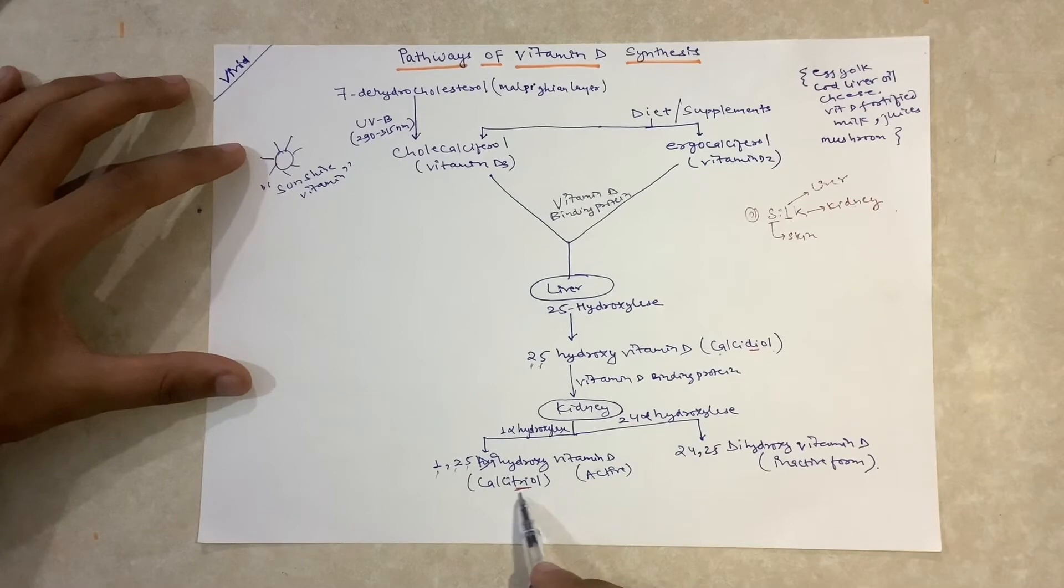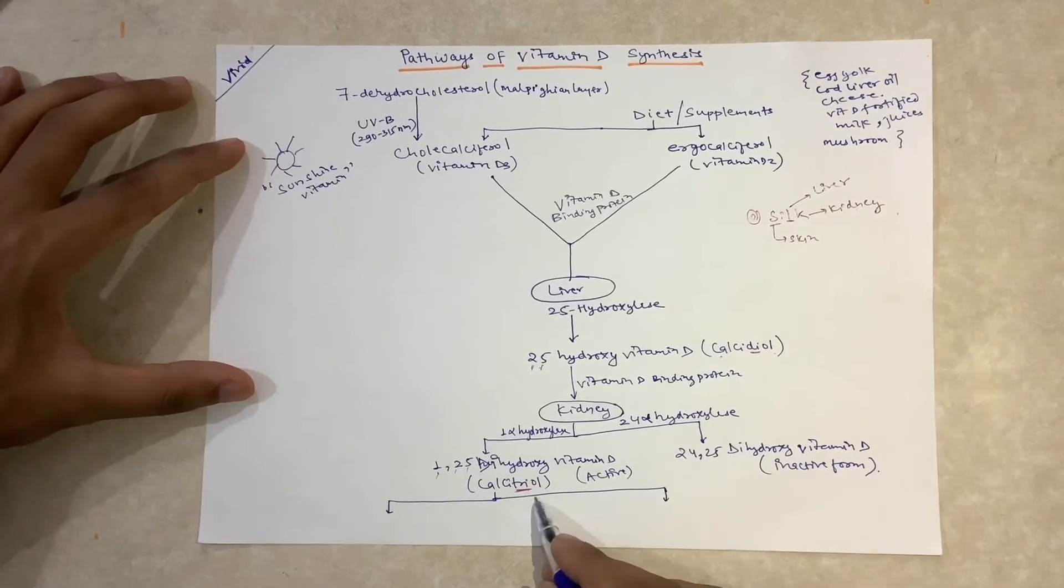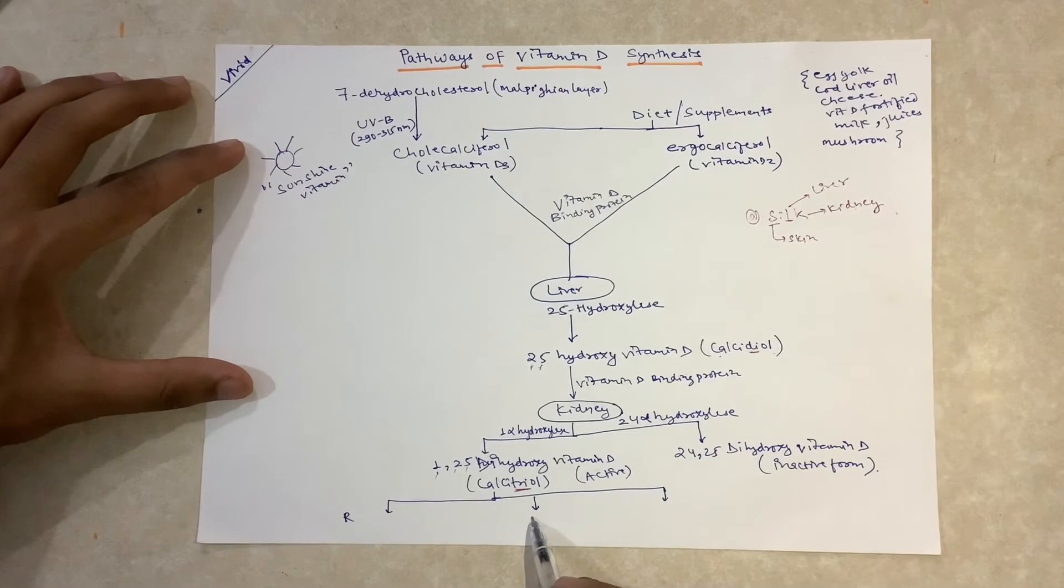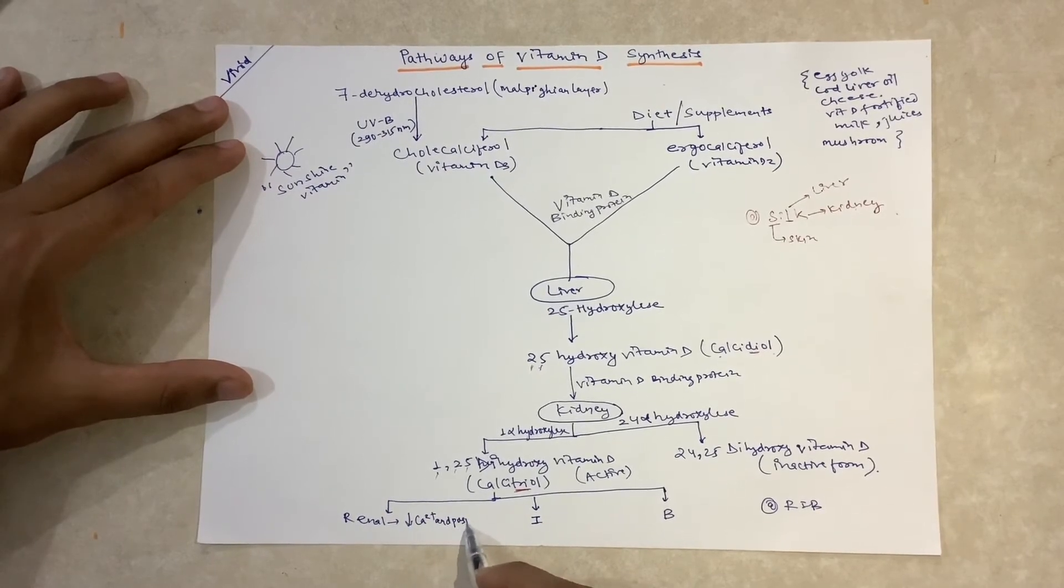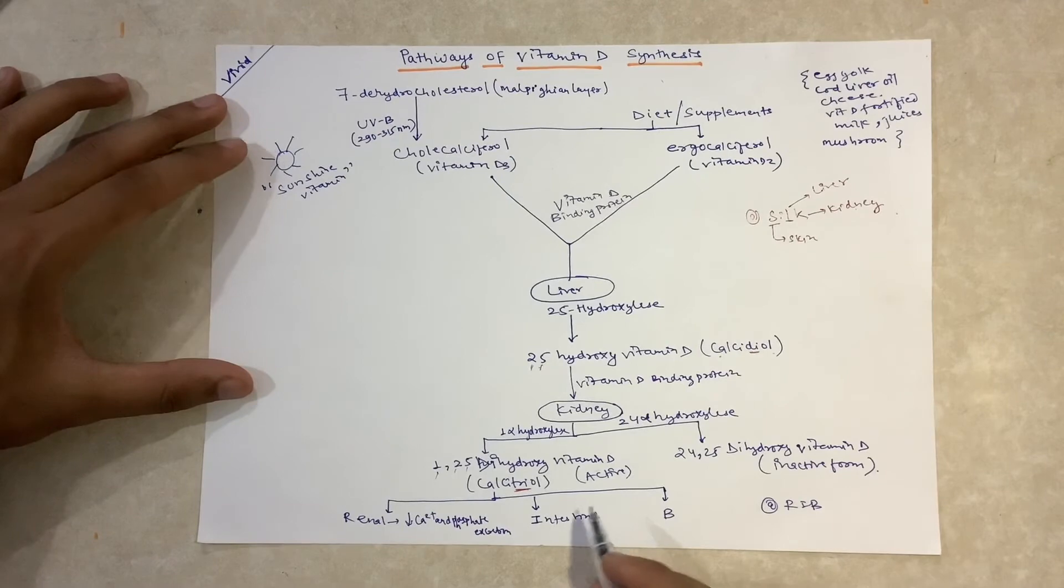Now, the role of the active form, calcitriol, in the body. There are three roles: it acts on the renal system, intestine, and bone. In the renal system, it decreases calcium and phosphate excretion. In the intestine, it increases the absorption of calcium and phosphate.